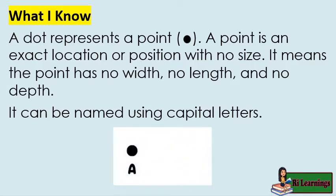A dot represents a point. A point is an exact location or position with no size. It means the point has no width, no length, and no depth. It can be named using capital letters. Look at the figure — the dot was named point A.